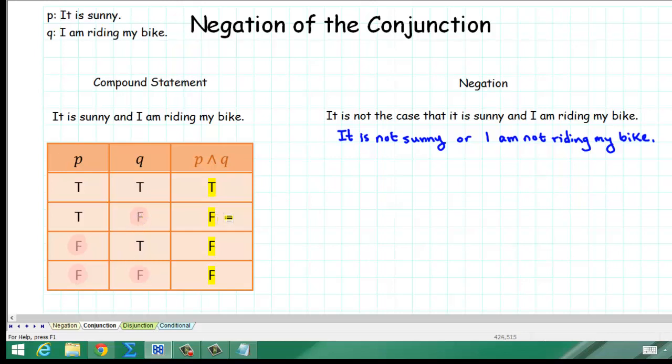So, it is not the case that it is sunny and I am riding my bike is equivalent to, it is not sunny or I am not riding my bike. Now, in order to actually prove this, we could write these statements in symbolic form and then show that each of the statements have exactly the same truth values. So, let's go ahead and do that.